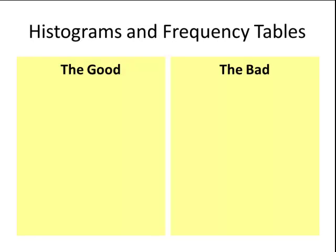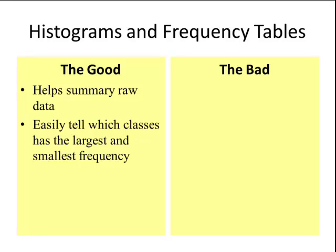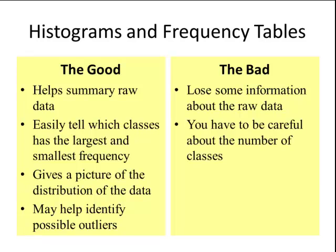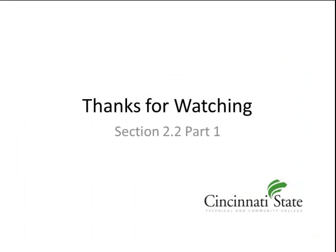So let's summarize histograms and frequency tables. Here's the good things: It helps us summarize raw data. We can easily tell which classes have the largest and the smallest frequency. It gives us a picture of the distribution of the data. And it may help us identify what's called possible outliers. We'll talk more about that in chapter 3. Now the bad things? We do lose some information by putting raw data into a frequency table or a histogram. You have to be careful about choosing the number of classes because we want to summarize the data and not distort it. Thanks for watching Section 2.2 Part 1.